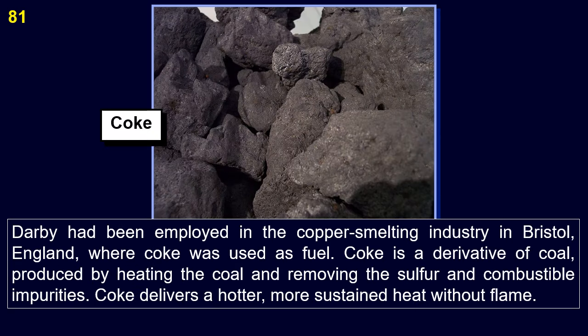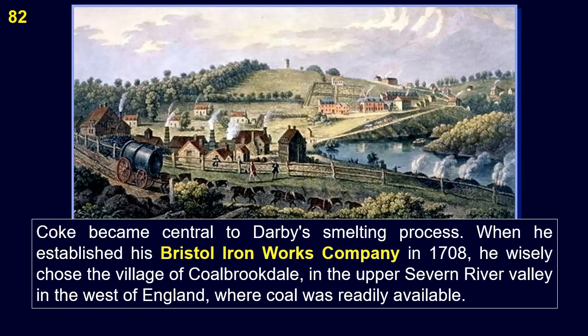Darby had been employed in the copper smelting industry in Bristol, England, where coke was used as fuel. Coke is a derivative of coal, produced by heating the coal and removing the sulfur and combustible impurities. Coke delivers a hotter, more sustained heat without flame. Coke became central to Darby's smelting process when he established his Bristol Iron Works Company in 1708, and he wisely chose the village of Coalbrookdale in the upper Severn River Valley where coal was readily available.